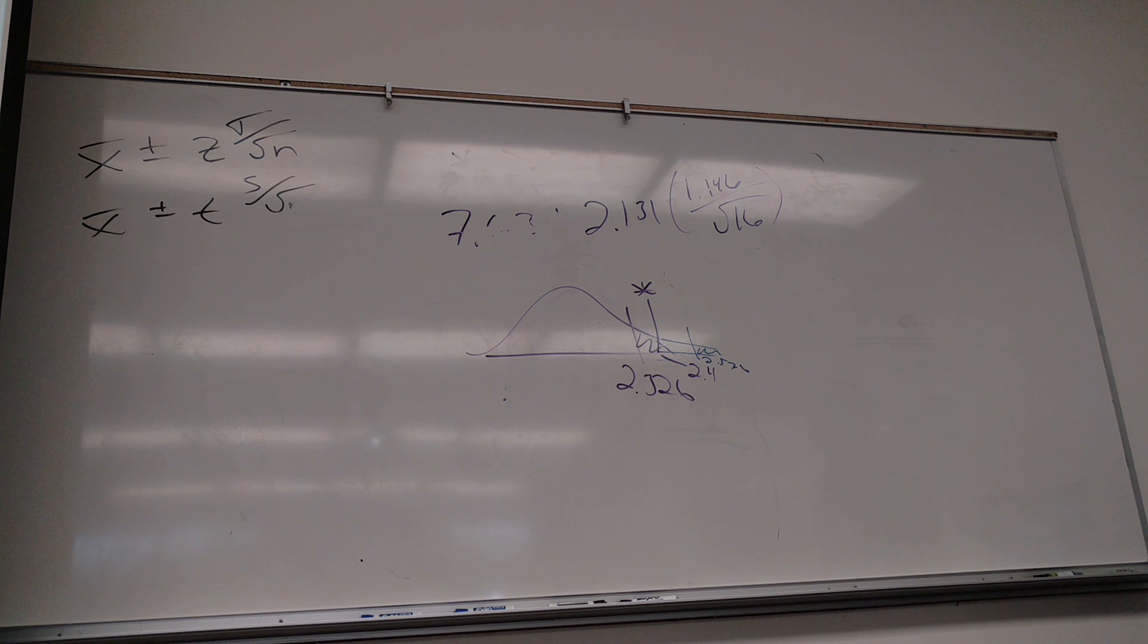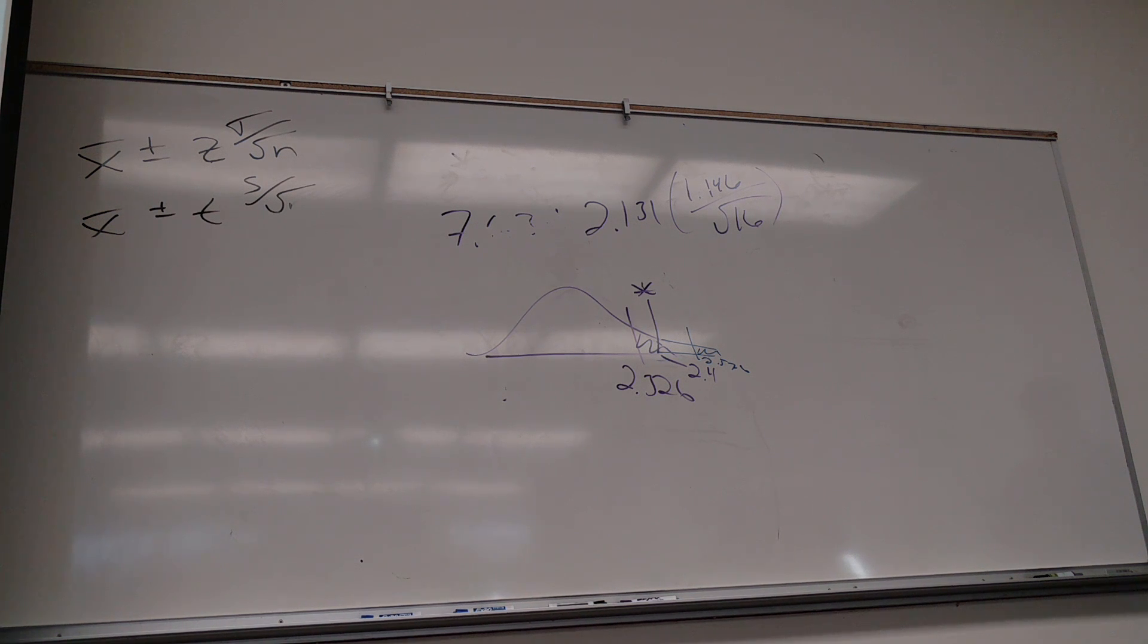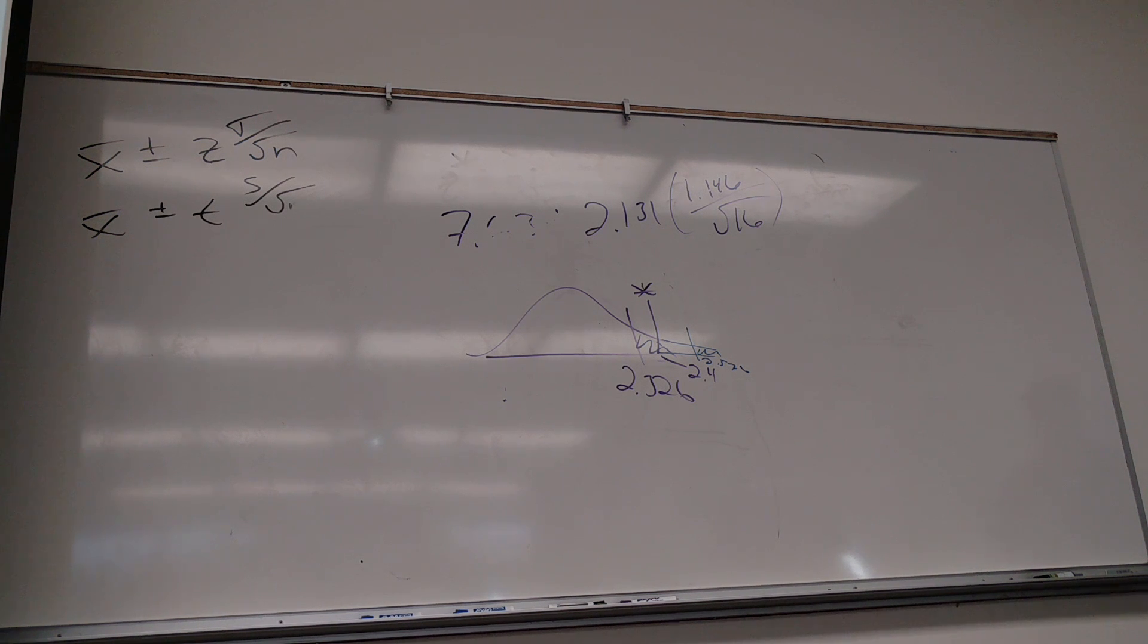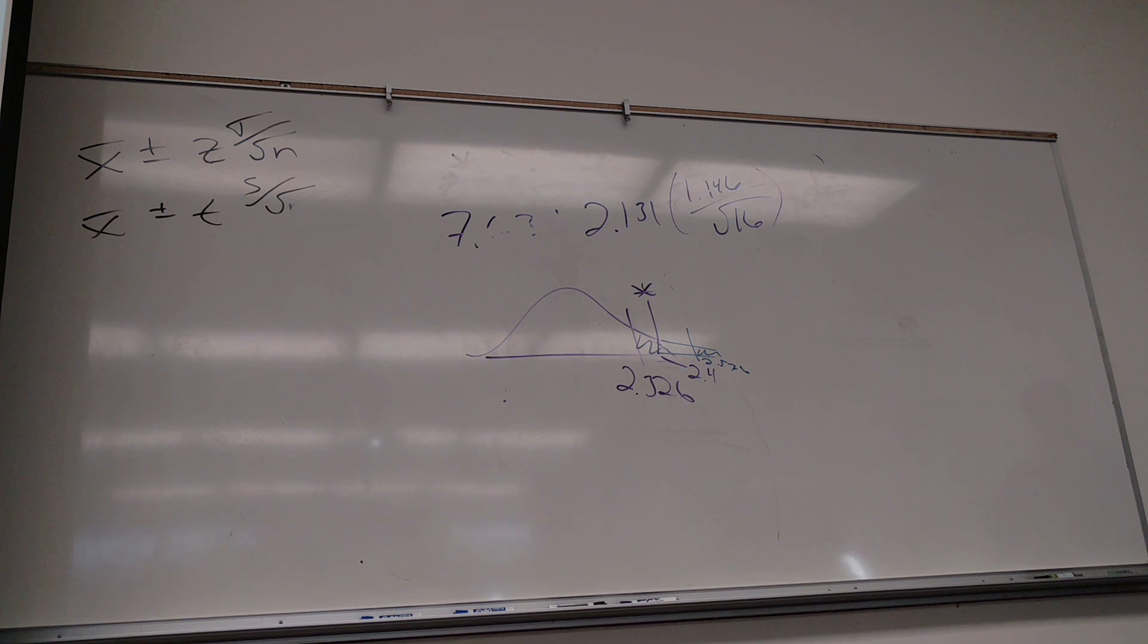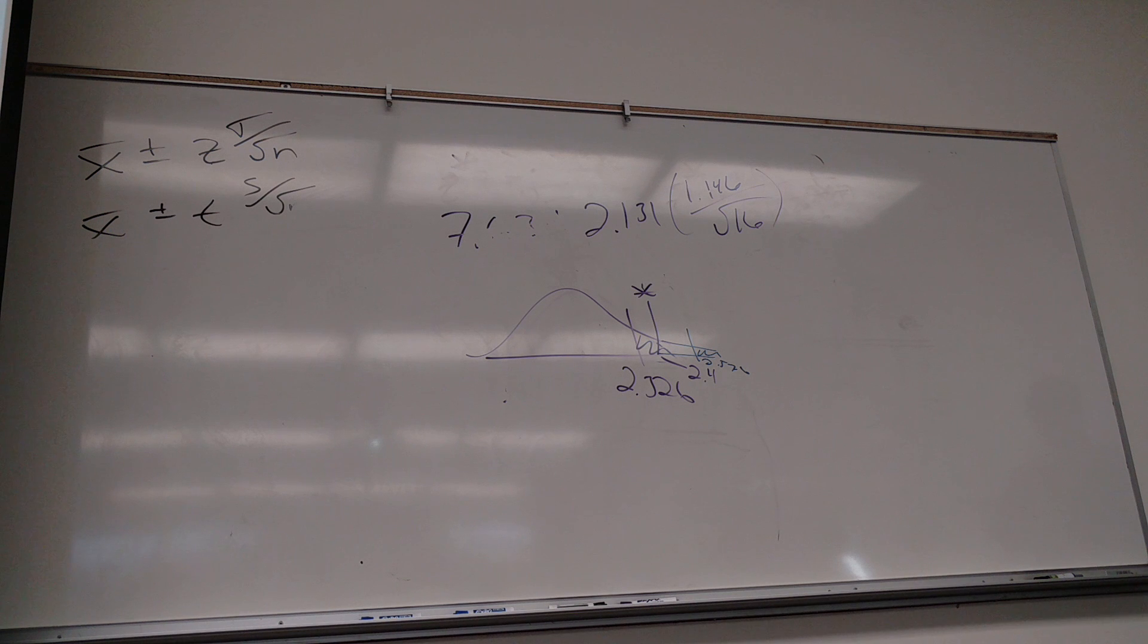So P values are always the area in your tail that your Z star makes. And if it's a two tail test, you just double it. I'm sorry, I just wanted to be redundant.